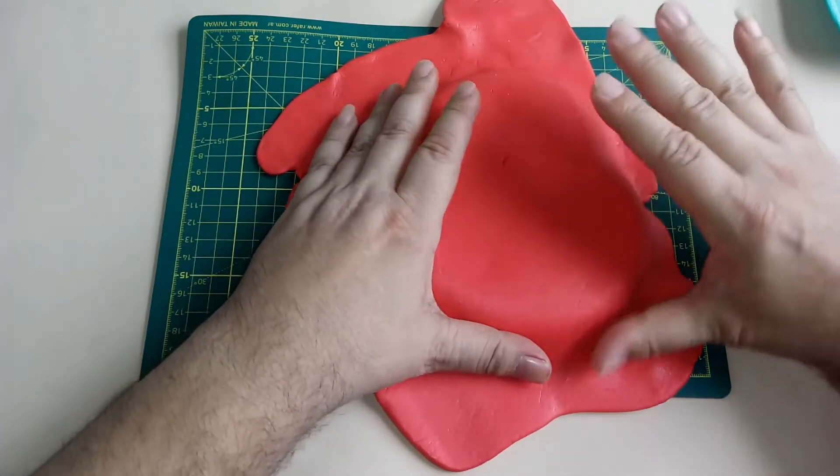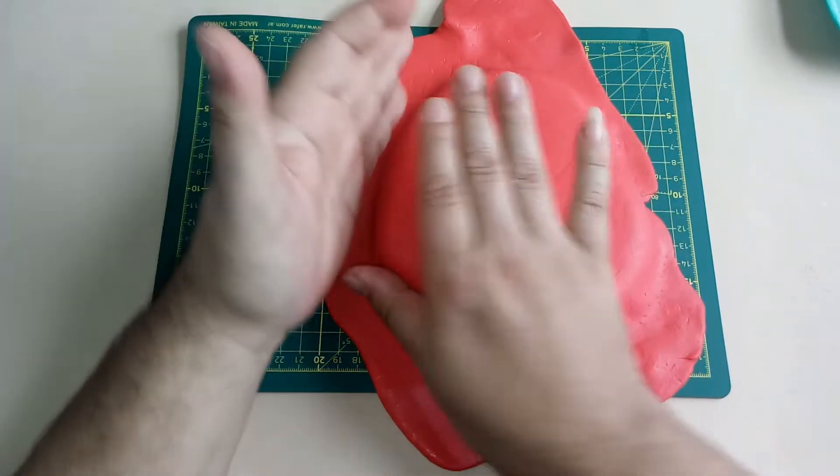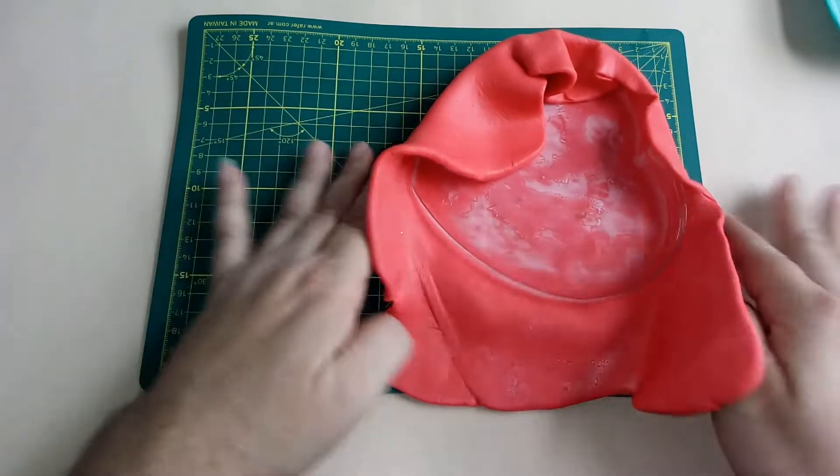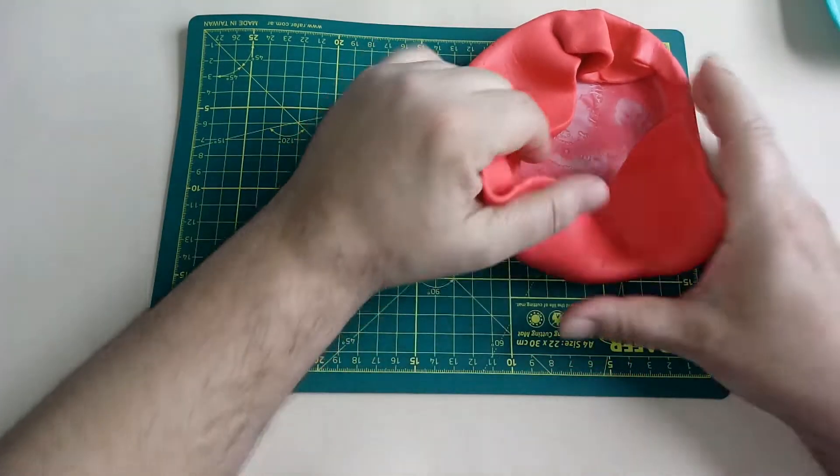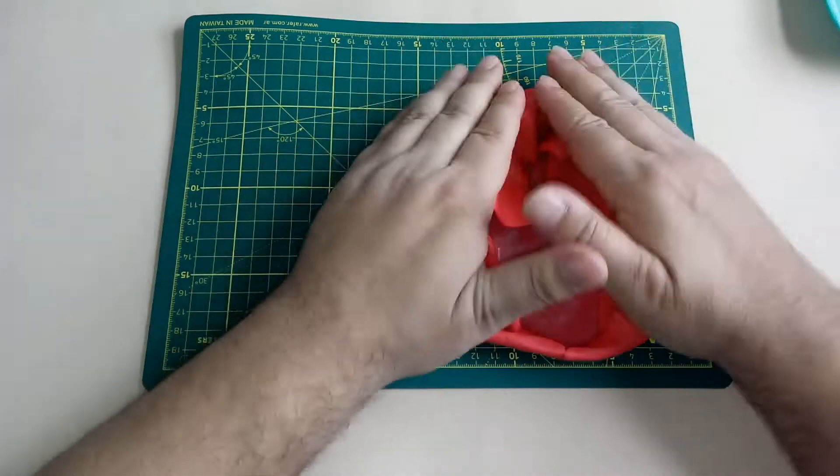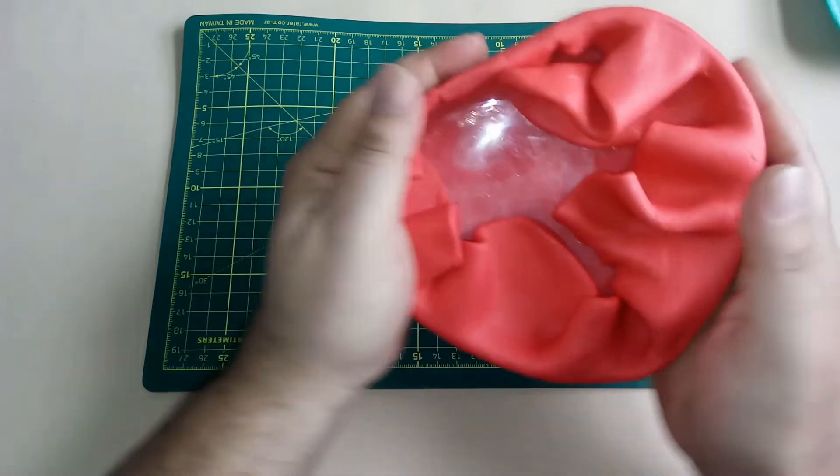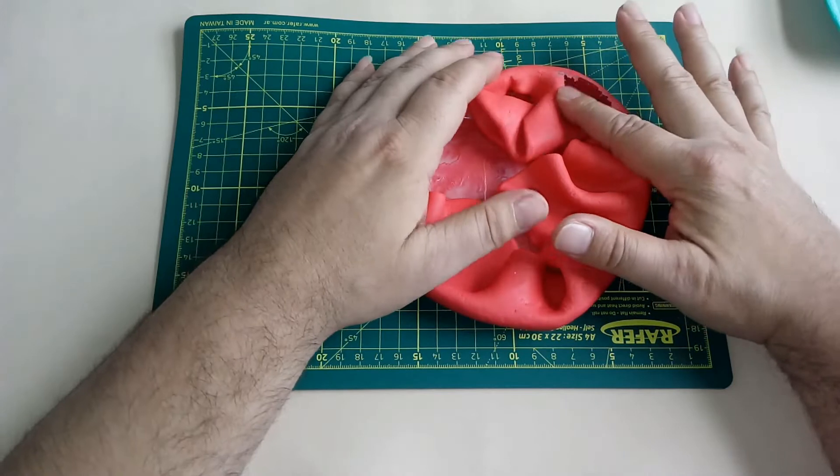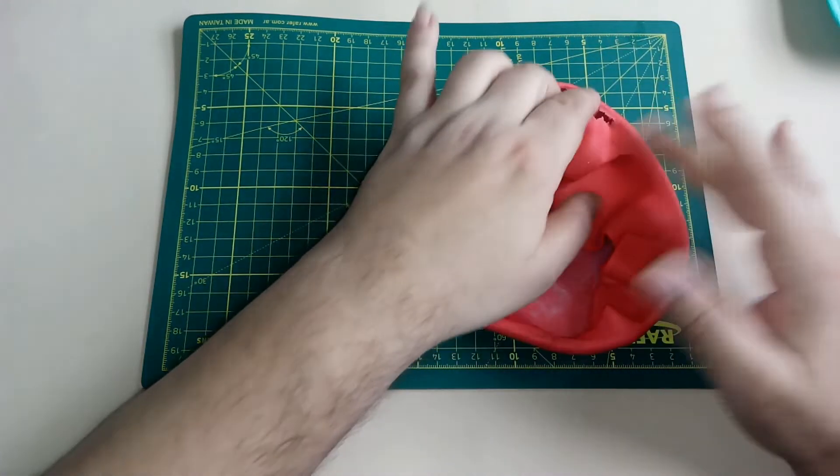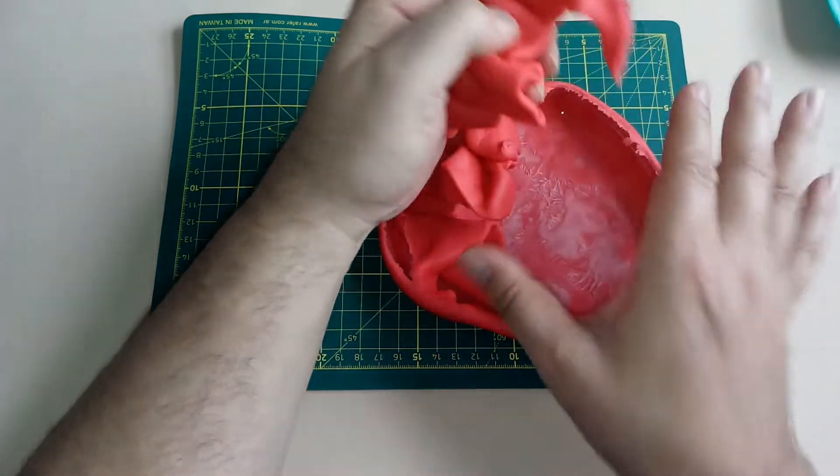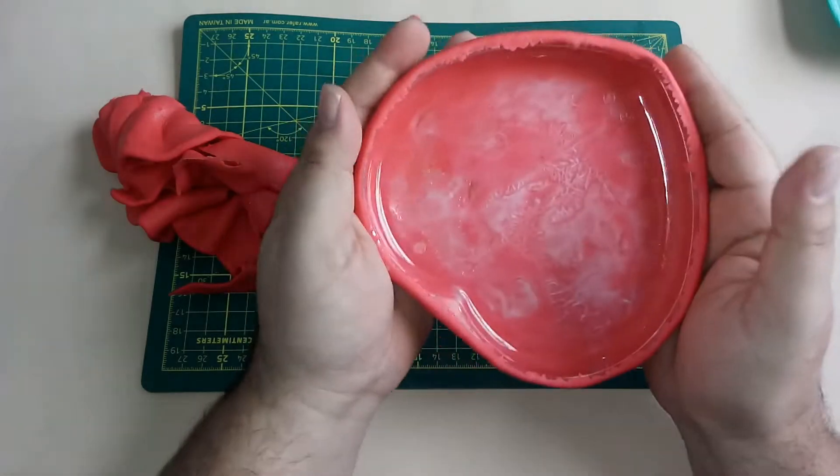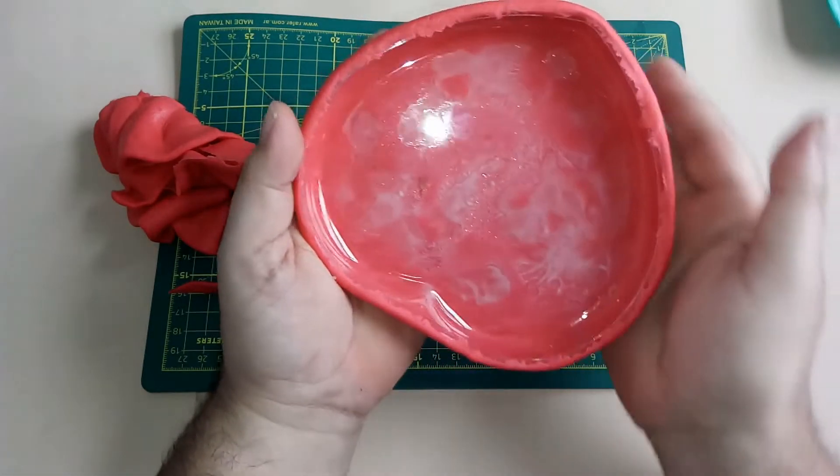Que vaya tomando la forma, tratando de que no queden burbujas de aire atrapadas. Voy a ir llevando hacia adentro todo el excedente. Y el mismo borde me va a ayudar a cortar todo esto que sobra. Voy a dejar estos excedentes durante un rato. Una vez que empiece a secar, ahí puedo cortar y emplorijar mejor.